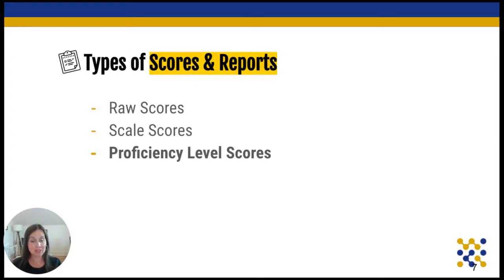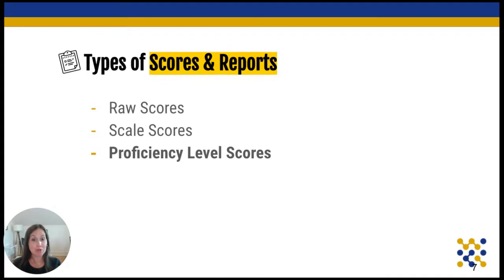There are three types of scores you'll see on the reports. First is the raw score, which is the actual number of items the student responded to correctly. Since it doesn't take item difficulty into account, raw scores aren't included on the score reports. The ones we'll look at more are scale scores, which do take item difficulty into account, so educators can use them to examine groups of students or performance over time. Most importantly, we'll look at proficiency level scores, which are an interpretation of those scale scores and align to the six WIDA language proficiency levels.